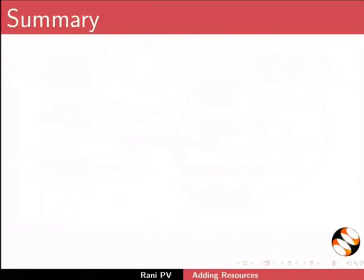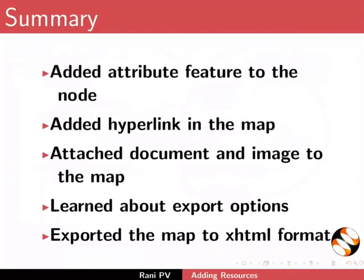Now, let's summarize. In this tutorial, we added attribute feature to the node, added hyperlink in the map, attached document and image to the map, learned about export options, and exported the map to XHTML format.